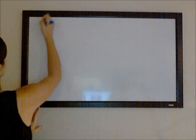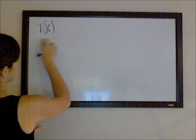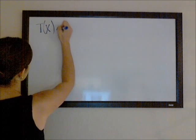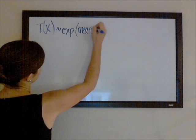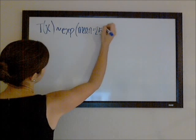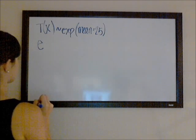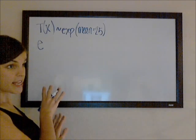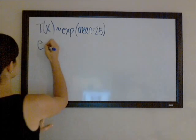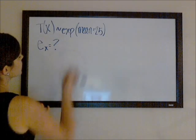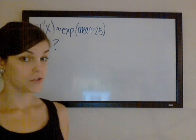Let's say that our future lifetime random variable, T(X), is exponentially distributed with a mean of 25. And we're going to try to find the curtate expected future lifetime for this life age X. So first let's think about what this means, that the future lifetime is exponentially distributed.